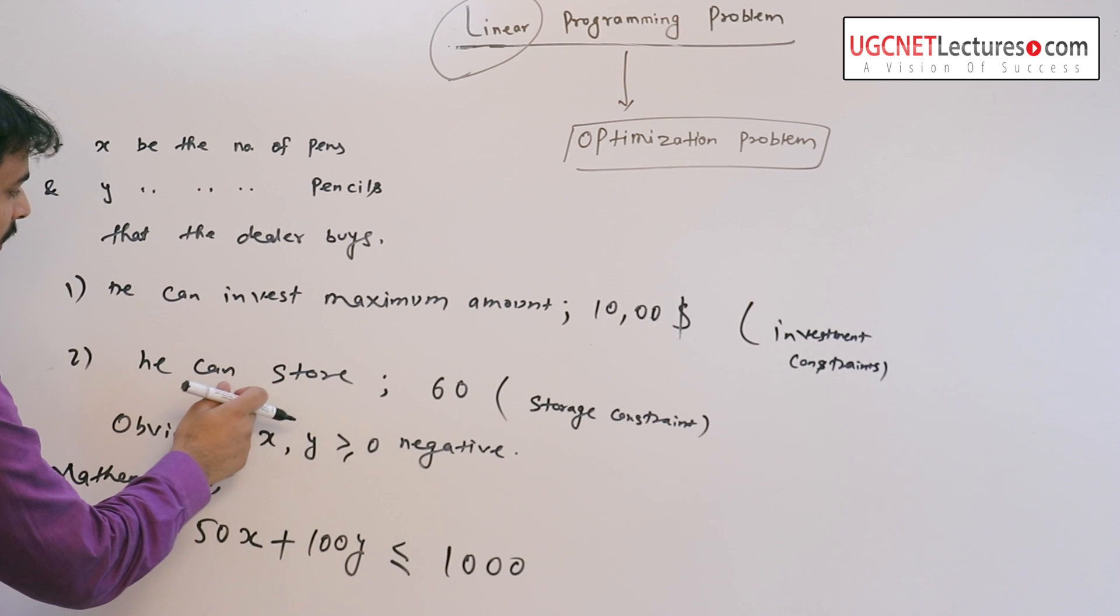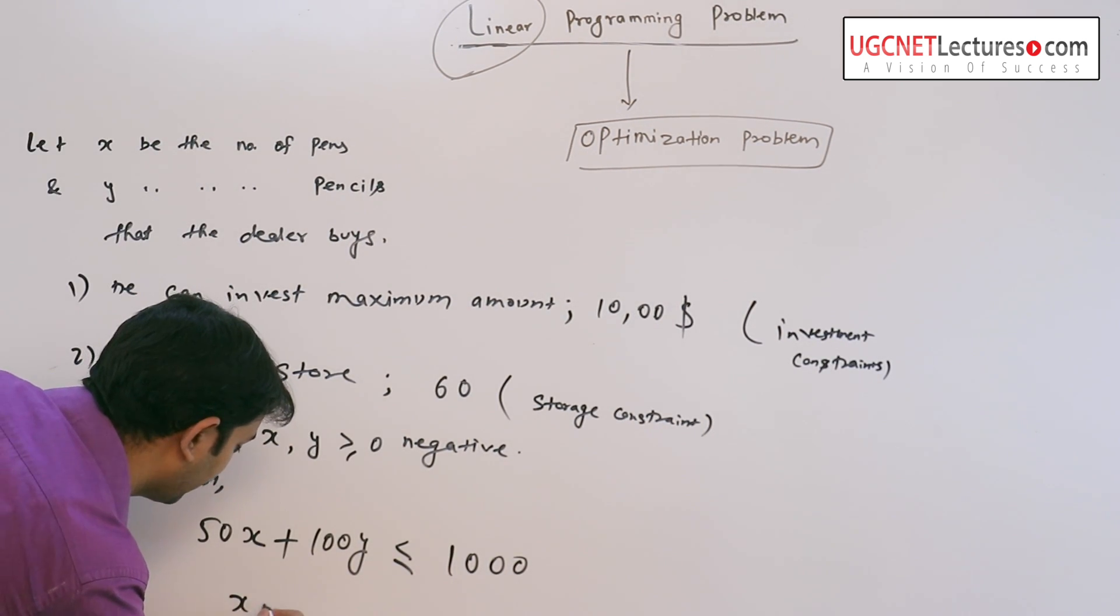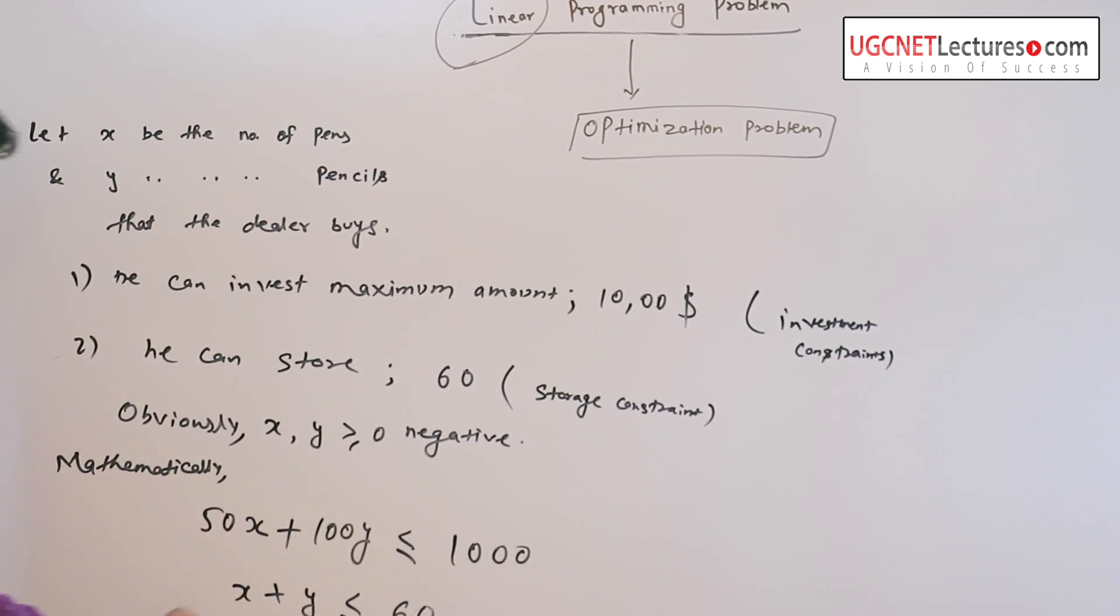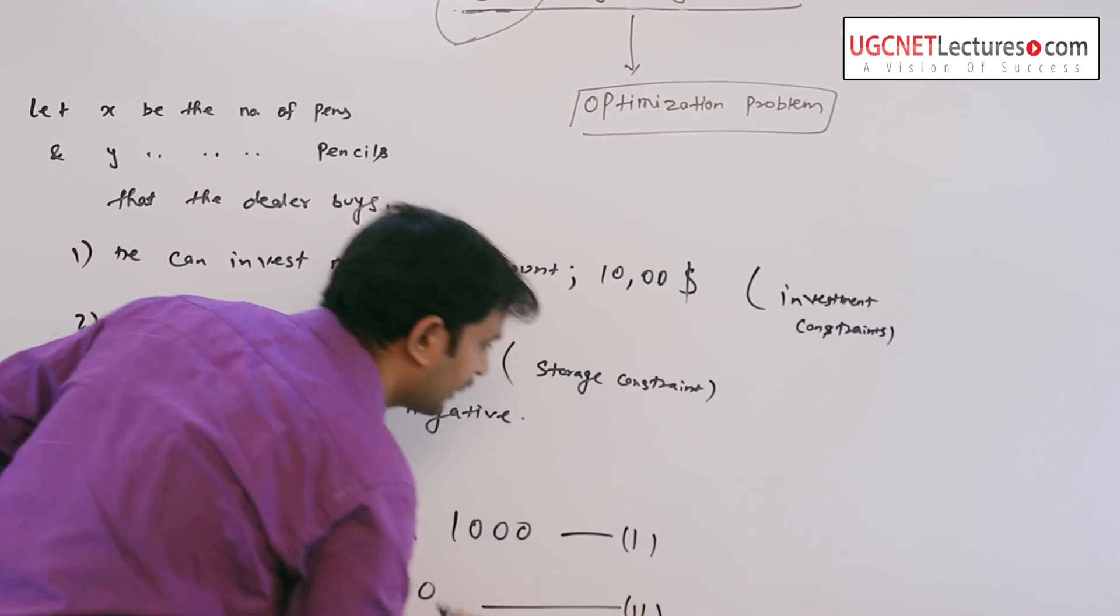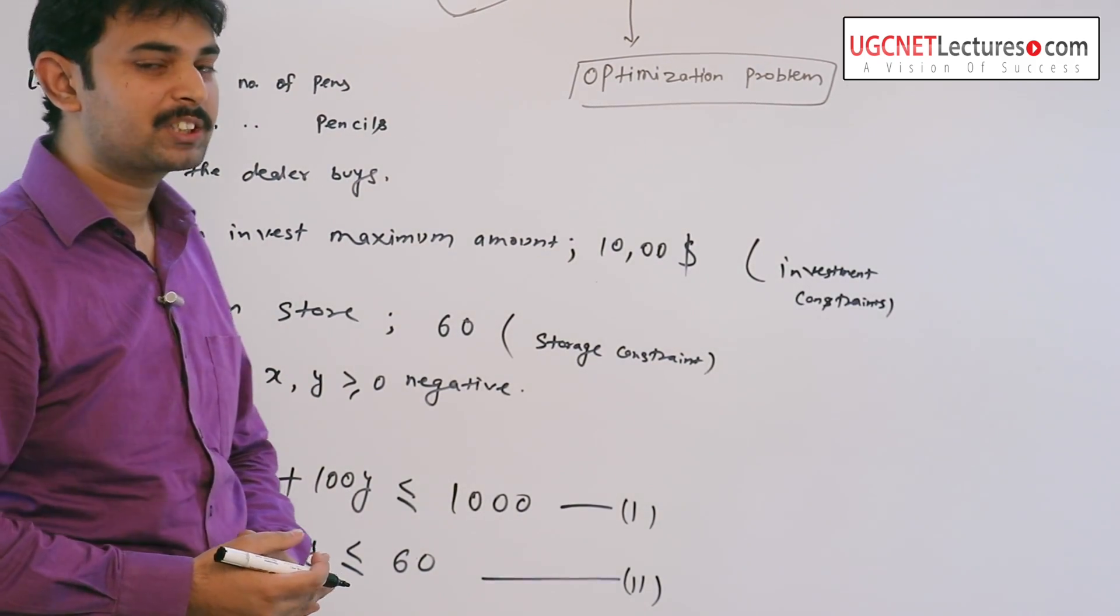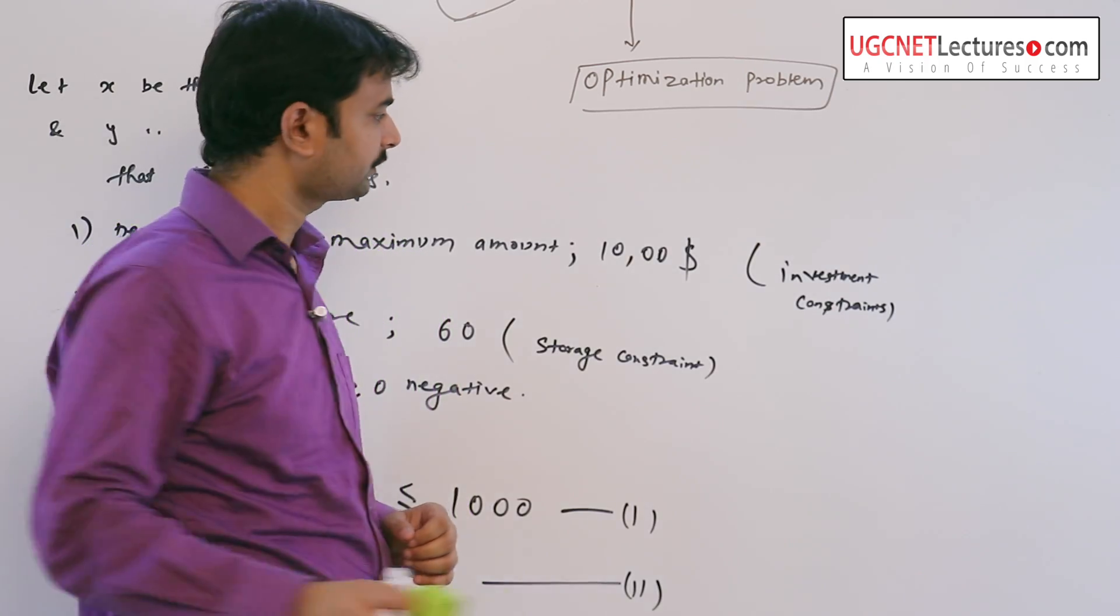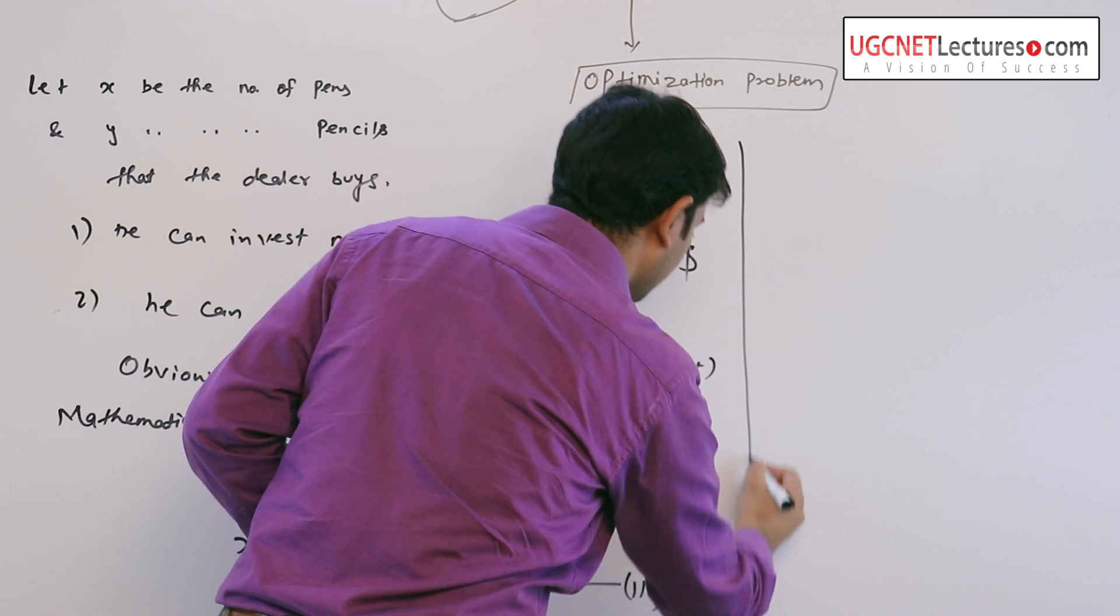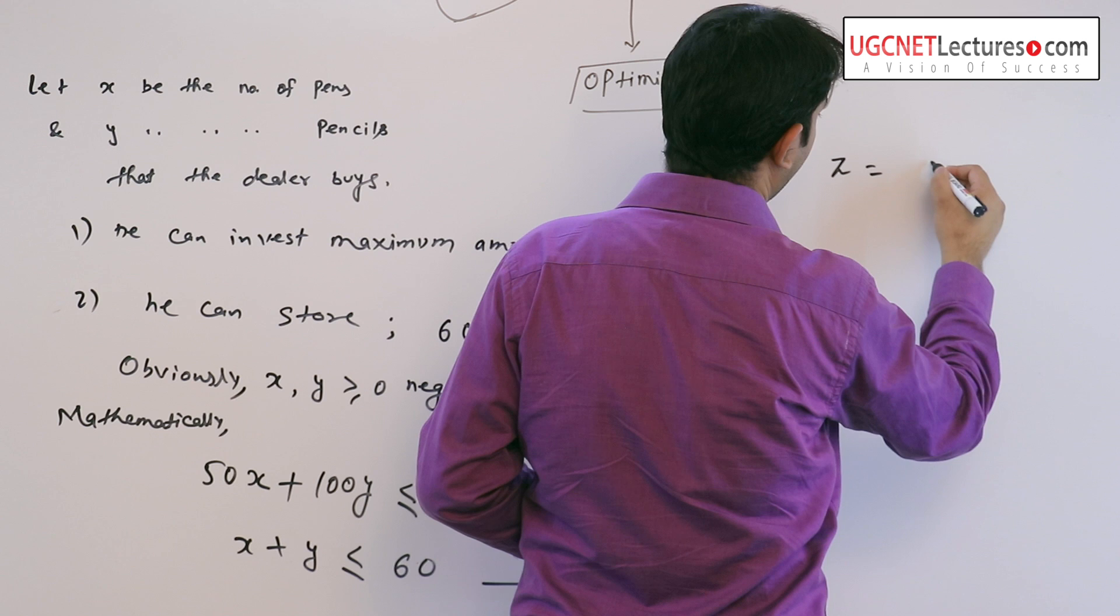And the second one, he can store items 60, so x plus y less than or equal to 60. So here it is first constraint and this one is second constraint. Now the dealer wants to maximize his profit.